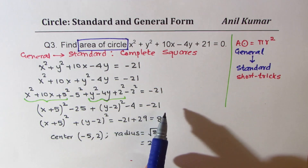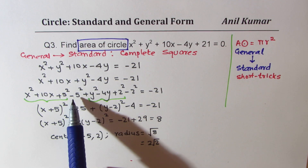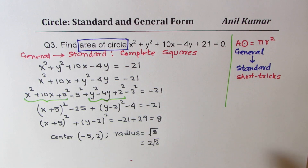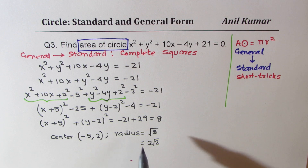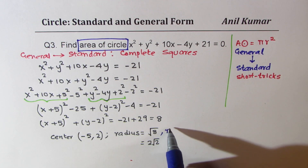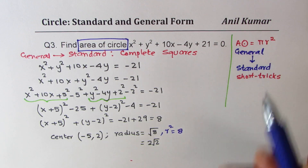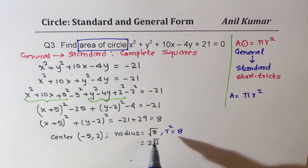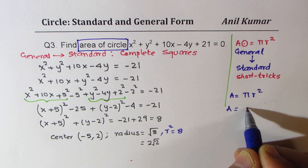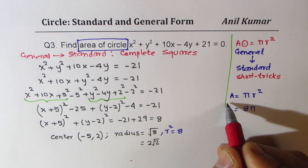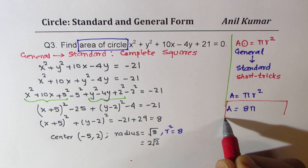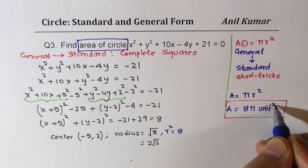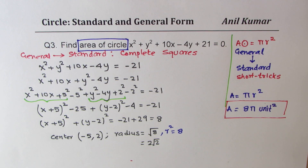The process is clear. You can also save steps by adding 5² and 2² directly to the right side. Since r² = 8, the area is πr² = 8π square units. It is a good idea to include units in your answer.